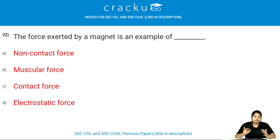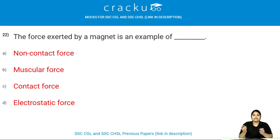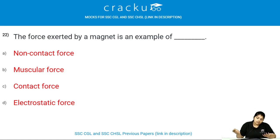The force exerted by a magnet is an example of what kind of force? A magnet can exert a force without even making contact with an object — it attracts iron without contact — so it is an example of a non-contact force.